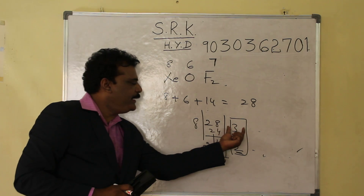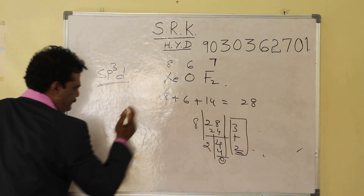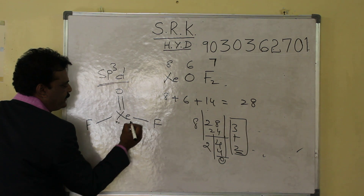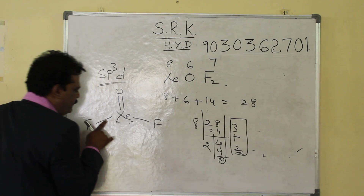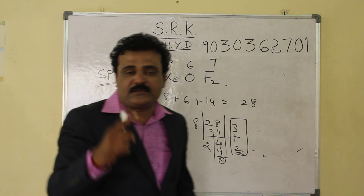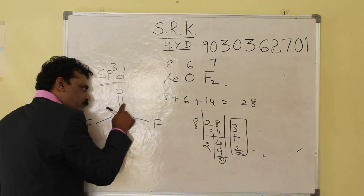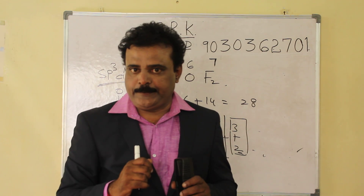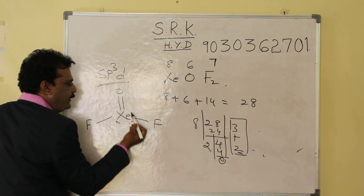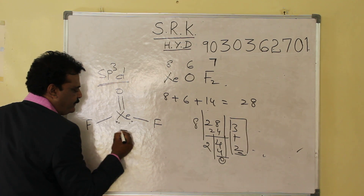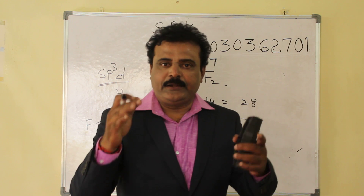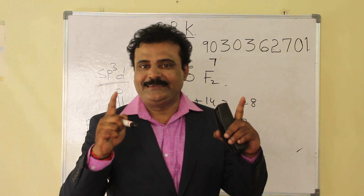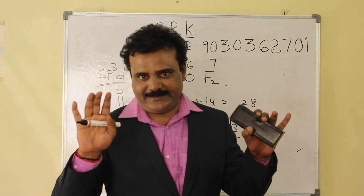SP3D means 3 bond pairs and 2 lone pairs. For xenon with fluorines and lone pairs, note that even a double bond must be counted as a single bond. Xenon belongs to group 8, so it has 8 electrons. I think students might now understand how to calculate and find out hybridization in different molecules. The magic numbers are 2 and 8 — don't forget, that is the trick. Thank you.